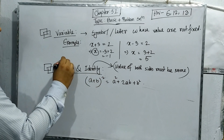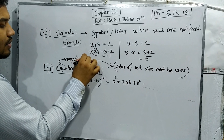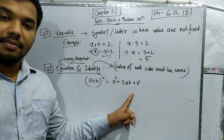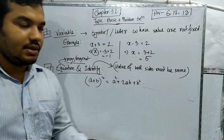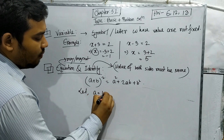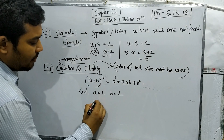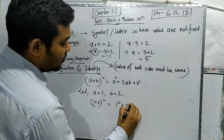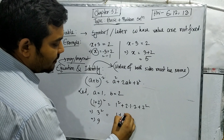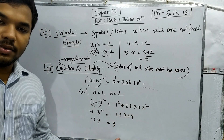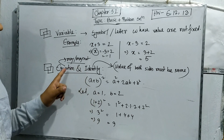For an identity, the value of both sides must be the same. For an equation, the values may or may not be the same. If we take a equals 1 and b equals 2, the left side is (1+2)² = 3² = 9, and the right side is 1 plus 4 plus 4 equals 9. Since both sides are equal, we say this is an identity as well as an equation.